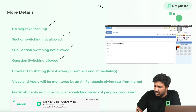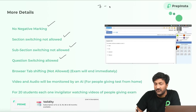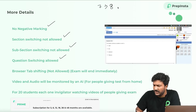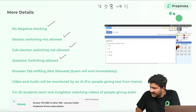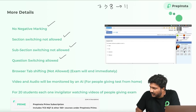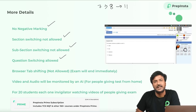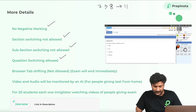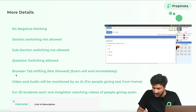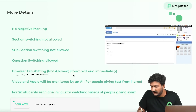However, question switching is allowed. For example, you can skip question 7 and go directly to question 8 or even question 11. You'll just click on the question number in the interface. One more important thing: browser tab shifting is not allowed — the exam will end immediately if it detects you've switched the browser tab.